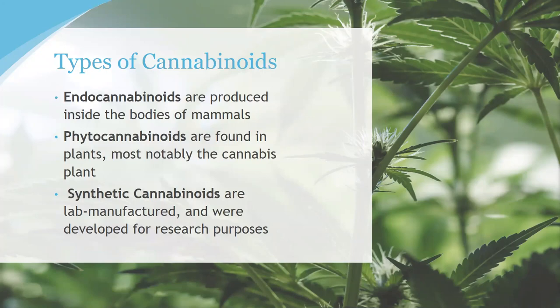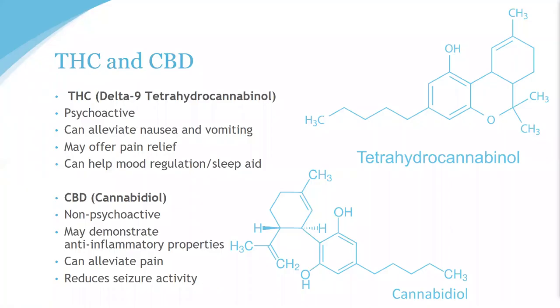Let's look at some specific cannabinoids beyond THC and CBD. Delta-9 tetrahydrocannabinol, or THC, gives rise to the feelings of being high. THC is currently one of the most studied phytocannabinoids. In terms of therapeutic value, THC has a long recognized history of effectiveness in reducing nausea, as an appetite stimulant, reducing intraocular pressure, and is also prescribed for its role in pain relief, as a sleep aid, and to elevate mood.